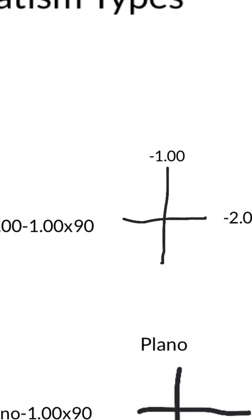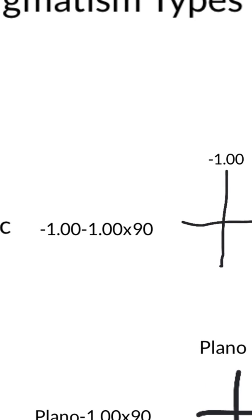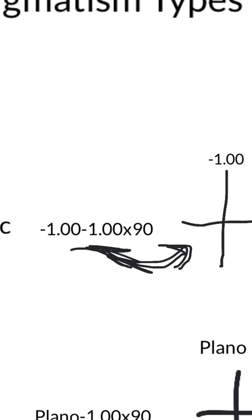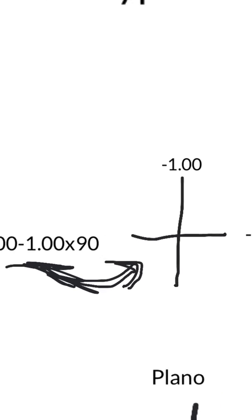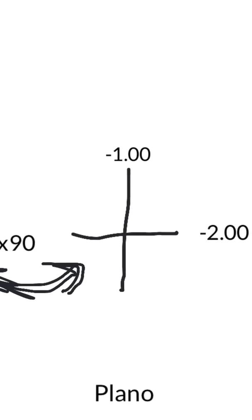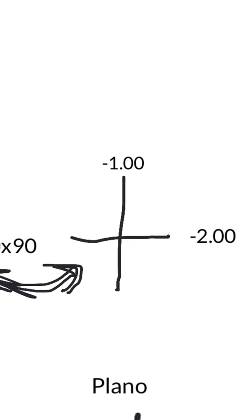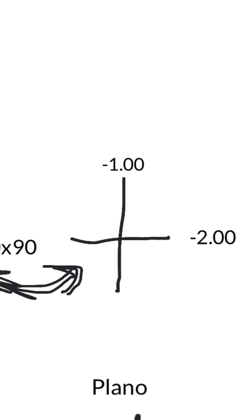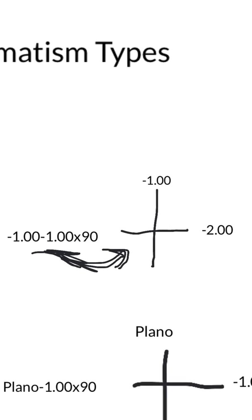You can write what's called an optical cross, or power cross, using this prescription. If you want to know how to do this, I made a video — it's video number one of the series — showing you how to convert the eyeglass prescription to a power cross. When you write out the power cross, you can see you have two minus numbers, so it's compound myopic astigmatism.